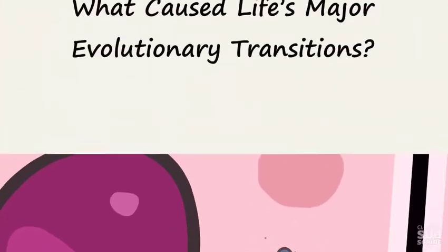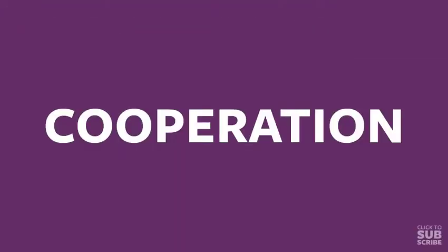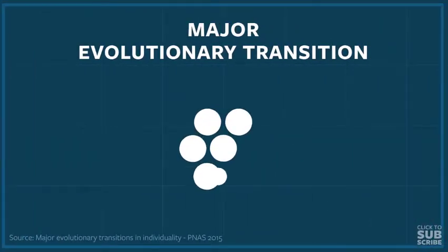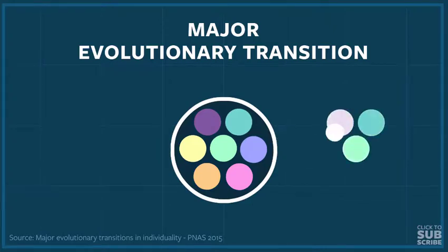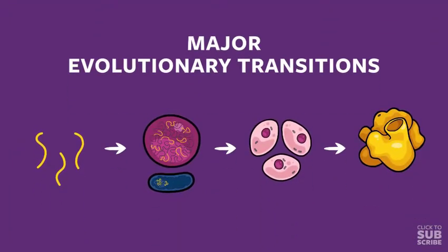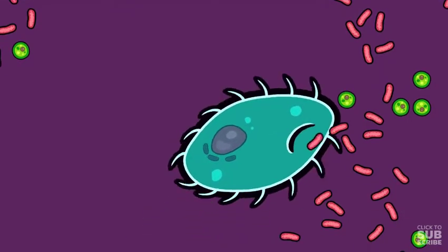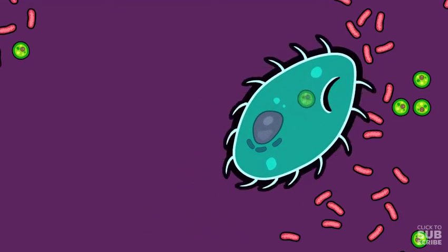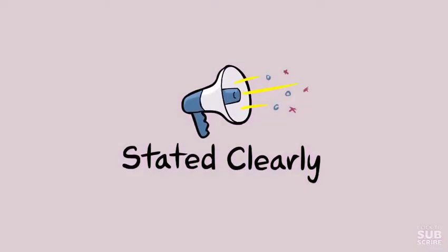So to sum things up: what caused life's major evolutionary transitions? The answer is cooperation. Major transitions begin when a group of organisms join forces to better survive and reproduce. If cooperation continues long enough, a new super organism may emerge — one that can then go on to reproduce and evolve as a whole. On the pathway that led to animals and humankind, at least three major transitions have been identified, resulting in four layers of life within your own body. Experiments in the laboratory have allowed us to directly witness the beginnings of major new transitions evolve. I'm John Perry, and that's major evolutionary transitions, stated clearly.